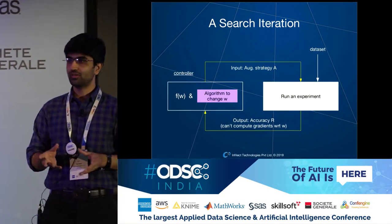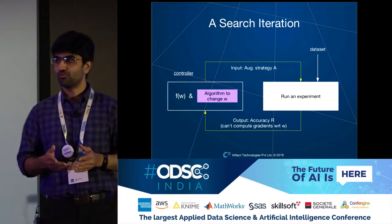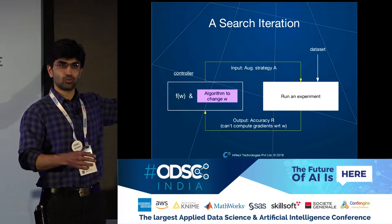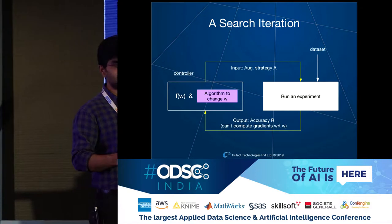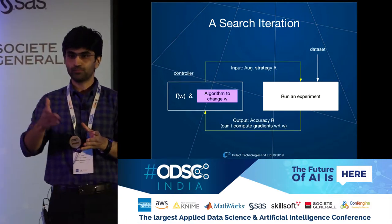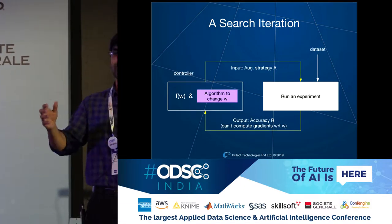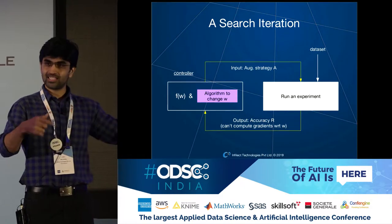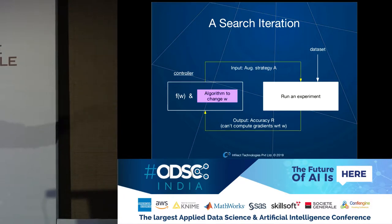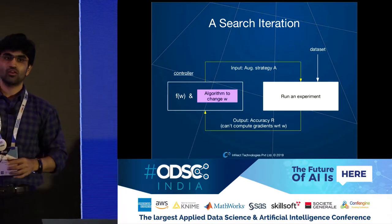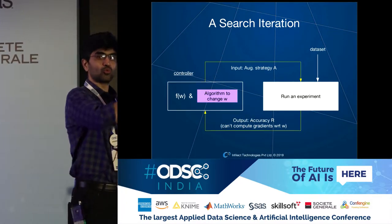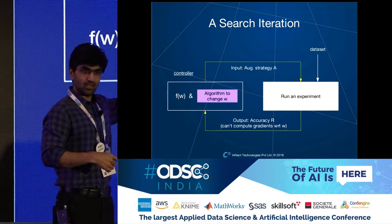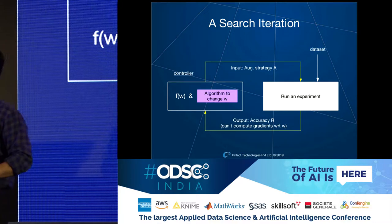Given it's a search in a discrete space, we venture into control theory. There are four main things: running an experiment with an input strategy sampled from the whole space, getting an output accuracy, using that output to tune a controller, which gives better strategies. As we spin this wheel, we generate better and better strategies because the controller is optimized to give better accuracy every time.